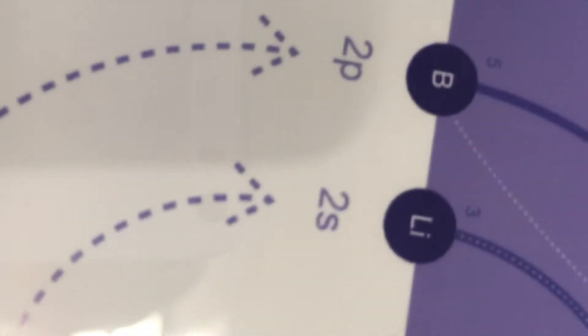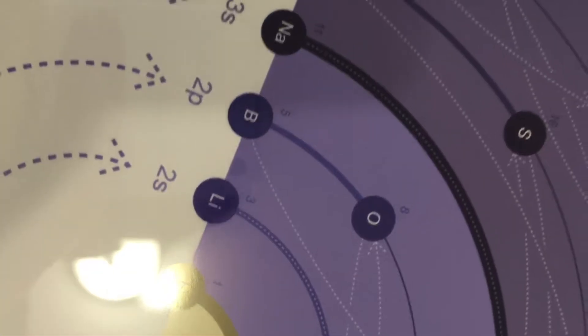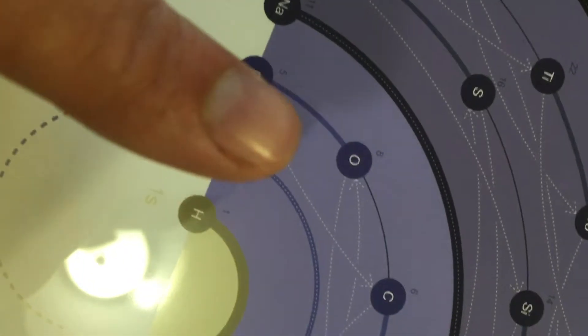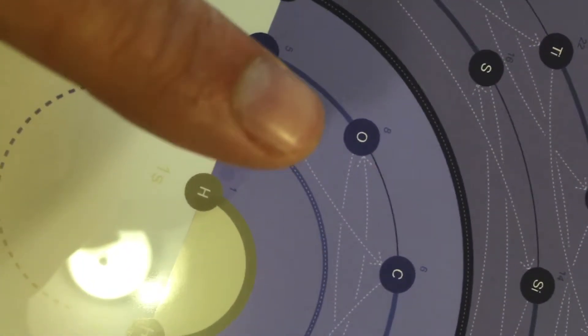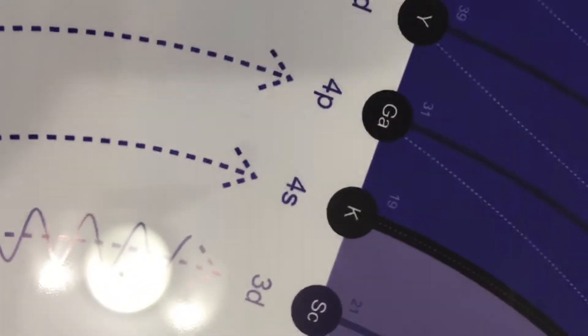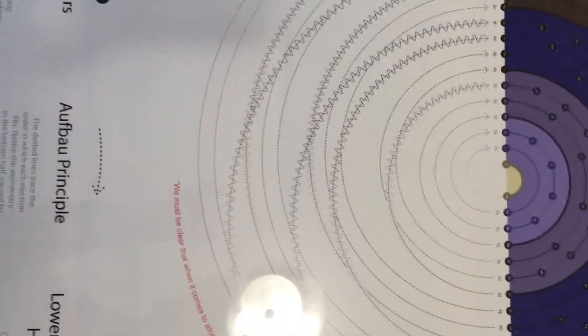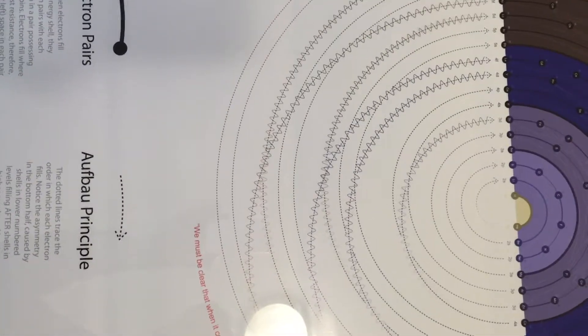Each element is traced into each energy shell as the left electron fills, then it goes back around to the right electron in that pair. 3p crosses over and goes into 4s, and then 4s actually comes back in to 3d. The asymmetry caused at the bottom is really cool, with those squiggly lines.